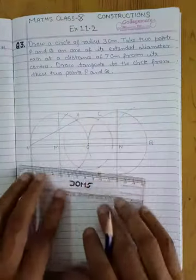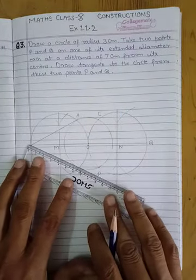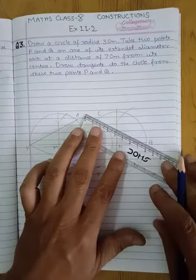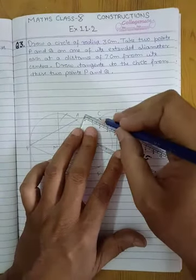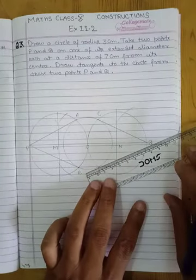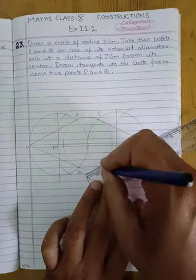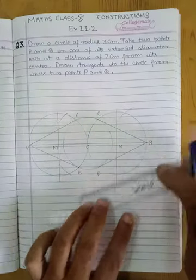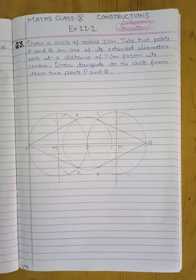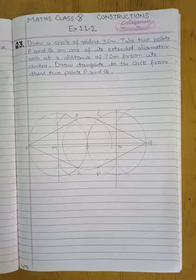And after that Q to C and then D to Q. So these are the tangents we have drawn on the given circle to the points P and Q. Understand?